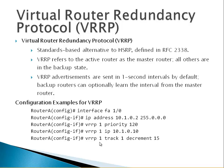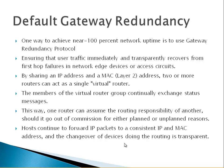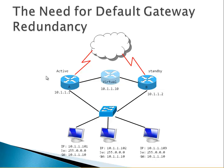We will talk about interface tracking and the decrement value. The standby router tracks the interface towards the internet, for example. If that interface goes down, the router's priority is decremented by 10 by default, but you can set it to a different value. If you also set preempt, the other router will become the active router because the tracked interface has gone down. So you set one of the interfaces as a tracking interface.